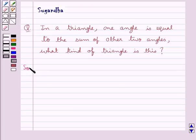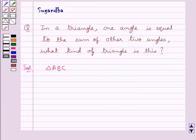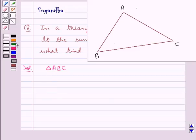Let's move on to the solution now. Consider this triangle ABC. We are given in the question that one angle is equal to the sum of the other two angles. So, let's say that angle A is equal to angle B plus angle C. Let this be equation 1.